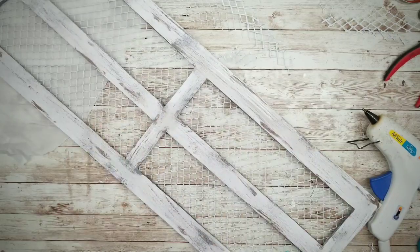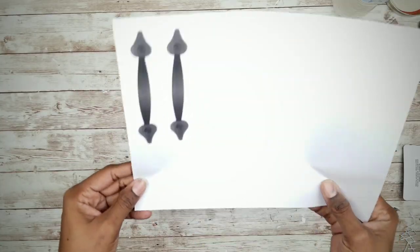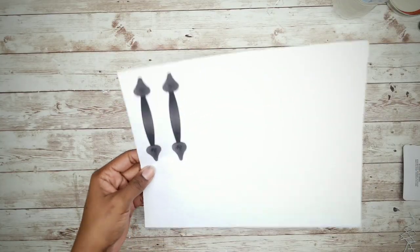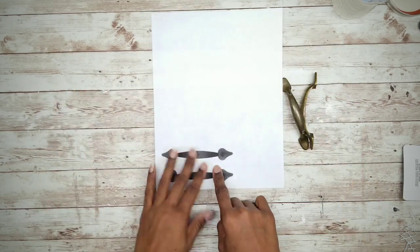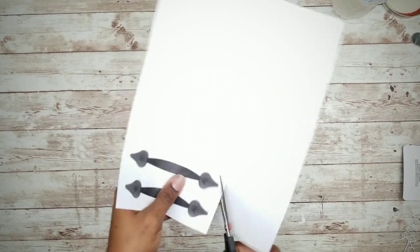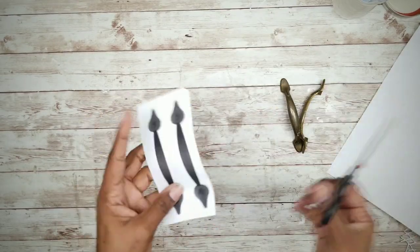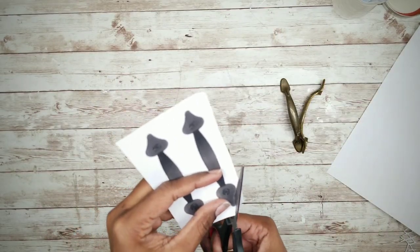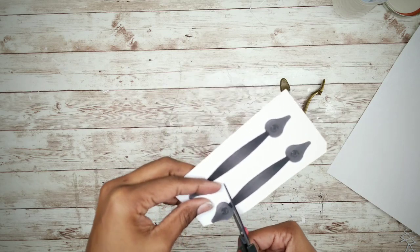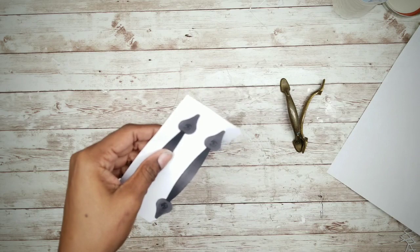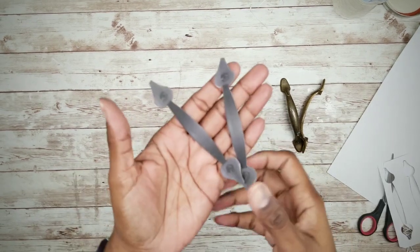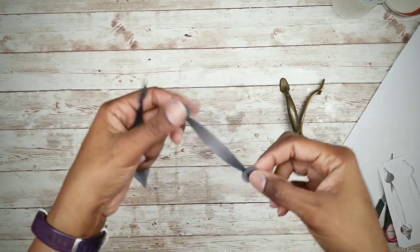So now I wanted to apply handles to my windows, and I printed these out on cardstock. Now you can use real handles if you like as well. I'm going to include the template for the handles I used in the description box below. Now we're just going to proceed with carefully cutting these out. Now once they're both cut out, we simply just hot glue these into place, and you are done.